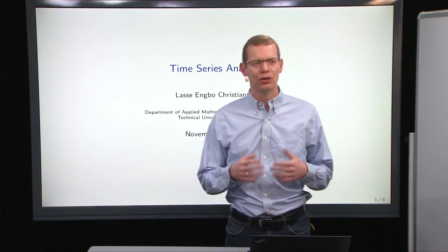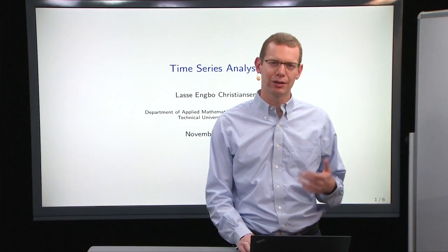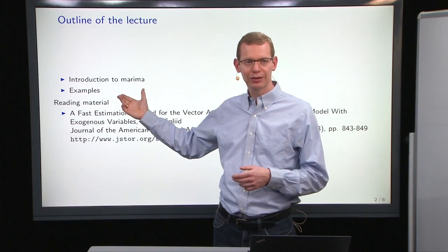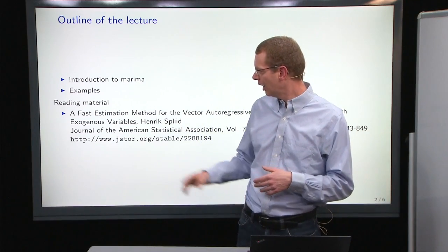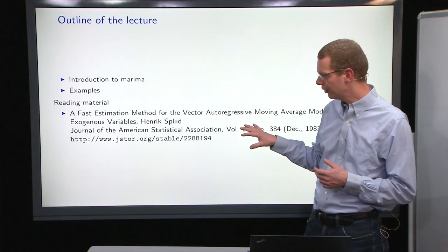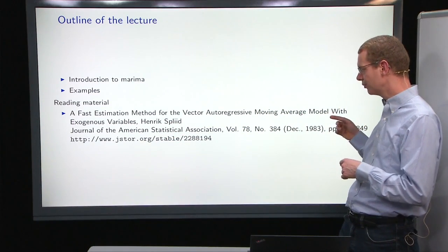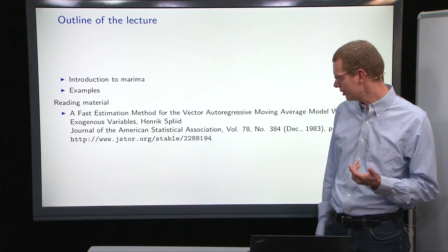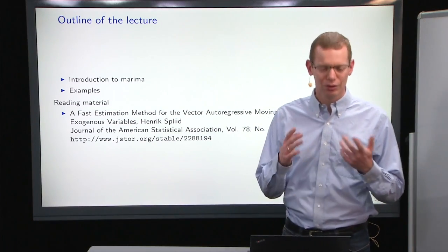Welcome back. Today we will look more into multivariate models, in particular how to estimate multivariate MARIMA models. We will focus a lot of the time on the so-called MARIMA package, and then we'll do a lot of time on doing some examples and understanding the theory behind it. Here is the reference: 'A Fast Estimation Method for the Vector Autoregressive Moving Average Model with Exogenous Variables' by Henrik Spliid, in the Journal of the American Statistical Association, December 1983.